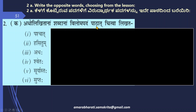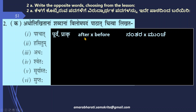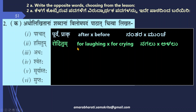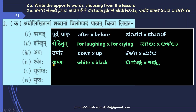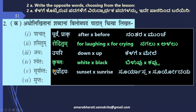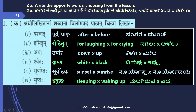Adholikhitanam shabdanam vilomapadam pathatchitva likhata — write the opposite words choosing from the lesson. Paschaat means 'after,' its opposite is Prak or Poorvam meaning 'before.' Hasitum means 'to laugh,' its opposite is Roditum meaning 'to cry.' Adhaha means 'down,' its opposite is Upari meaning 'up.' Shvetha means 'white,' its opposite is Krishna meaning 'black.' Suryastha means 'sunset,' its opposite is Suryodaya meaning 'sunrise.' Suptaha means 'sleeping,' its opposite is Prabuddhaha meaning 'awake.'